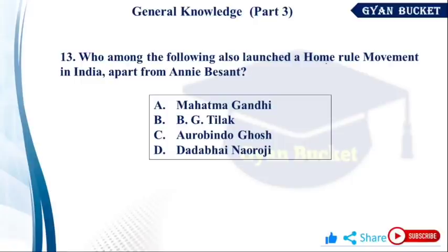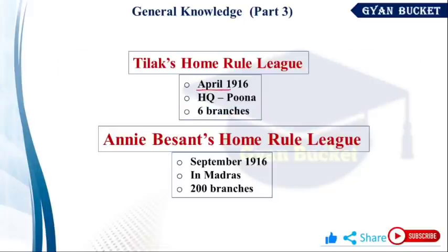Who among the following also launched the Home Rule Movement in India apart from Annie Besant? The Home Rule Movement started with Bal Gangadhar Tilak in April 1916, headquartered at Pune with a Bombay branch. Annie Besant started the Home Rule Movement in September 1916, Madras, with 200 branches. So Tilak started in April and Annie Besant in September.